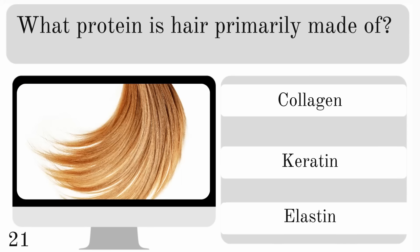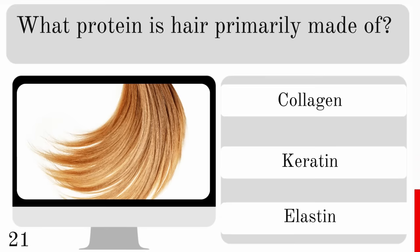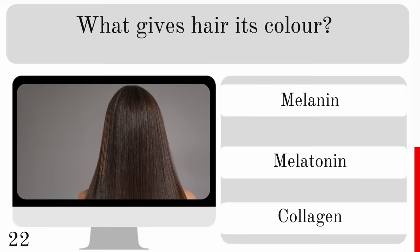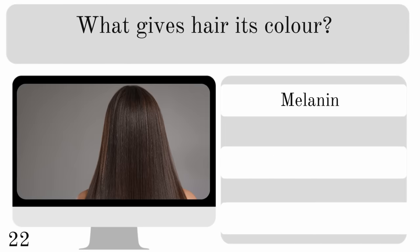What protein is hair primarily made of — collagen, keratin or elastin? It's made from keratin. So what gives hair its colour? Is it melanin, melatonin or collagen? The answer is melanin.